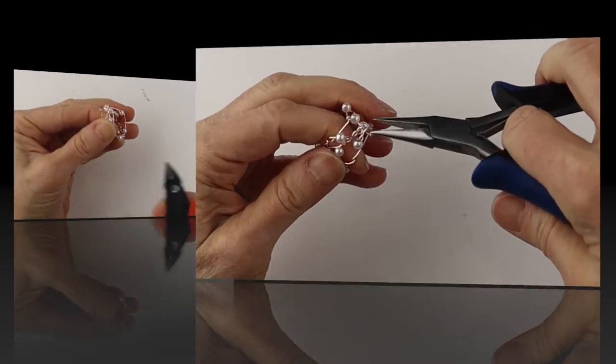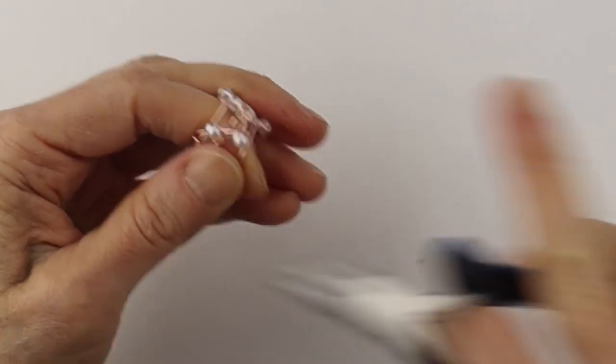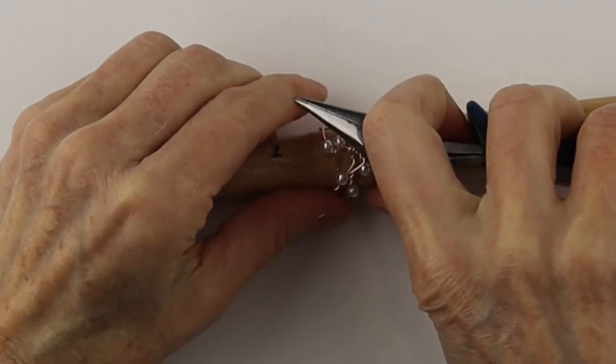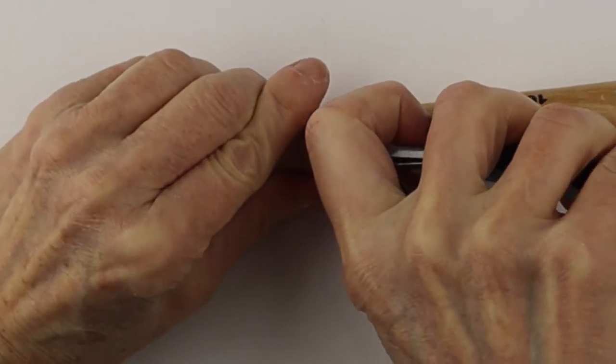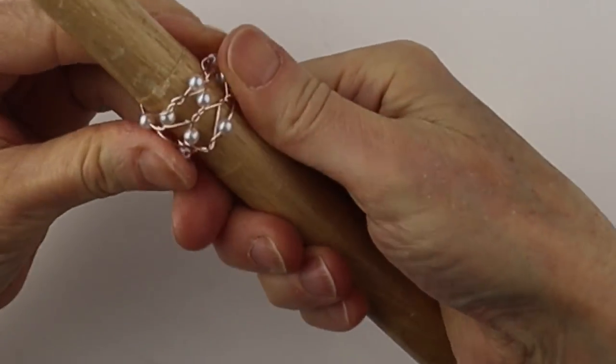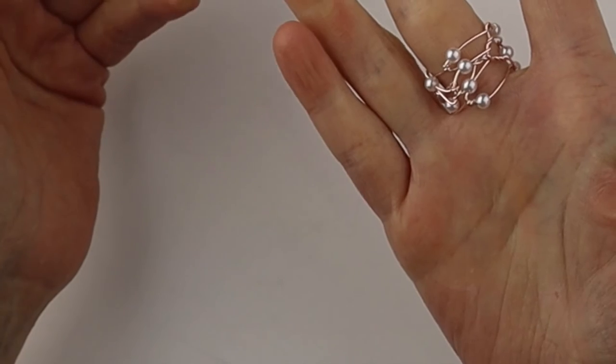And then we just have one more wire after that. And then we're going to clip it flush, pinch in all those pokey ends. Put it back on the ring mandrel, you could push it down with your flat pliers, adjust it with your fingers, and there you have your beautiful beaded basket weave ring.